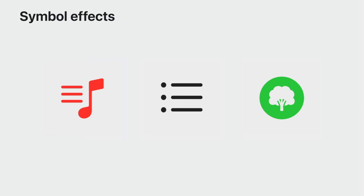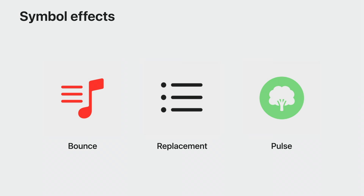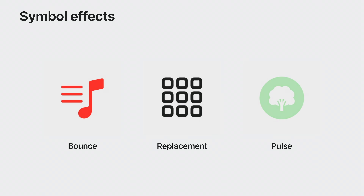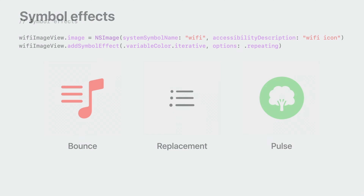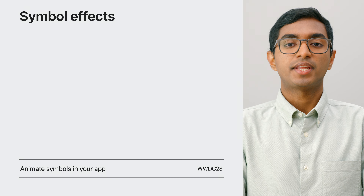Symbols are an essential part of designing your apps. In macOS Sonoma, Symbols gain brand new functionality: Symbol Effects. With Symbol Effects, your Symbols can now have effects like bounce, replacement transitions, and pulse animations — a great way to emphasize an action or state change. Adding a Symbol Effect is simple: set the image view's image property to a Symbol image, then when you want the effect, simply call addSymbolEffect on the image view. Note this only works if your NSImageView uses a Symbol image. For more info, check out the Animate Symbols in Your App video.